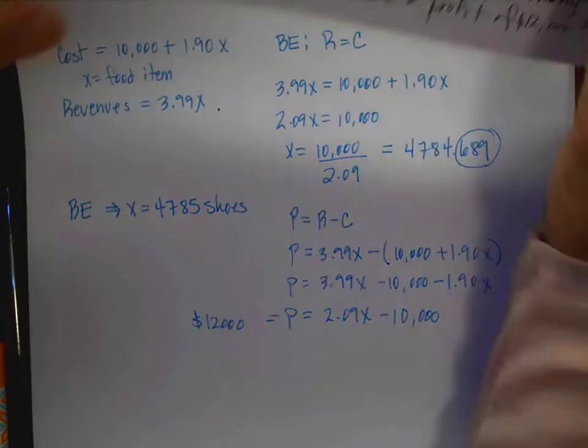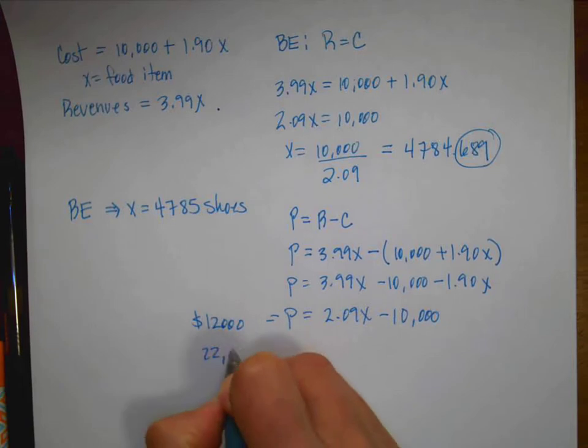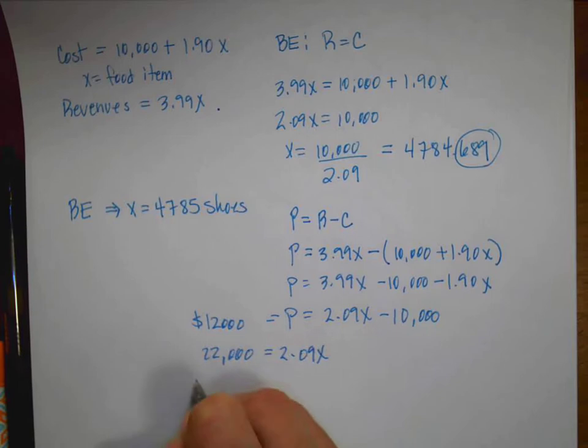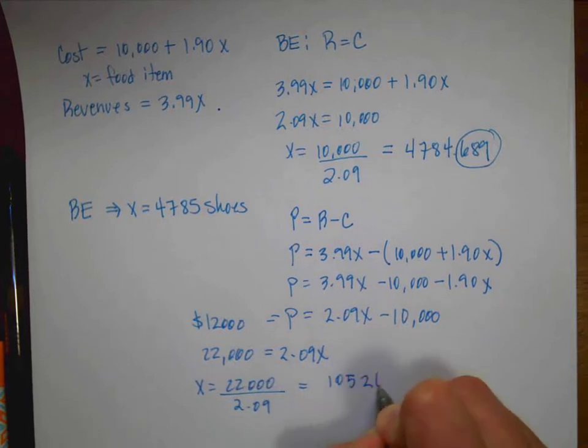And I want my profit to equal $12,000. Okay. I'll move my paper up just a sec. I'm going to get rid of my little piece of paper. So there's the $12,000. So now I just need to solve this equation. $10,000 plus $12,000 is $22,000. And that's going to equal 2.09X. So X is the 22 divided by the 2.09. And this, I think, is a funny number. 10, 5, 2, 6,